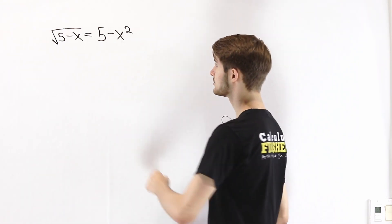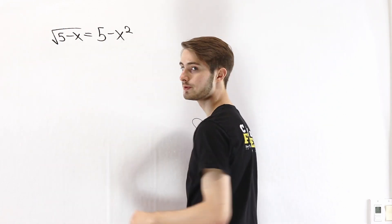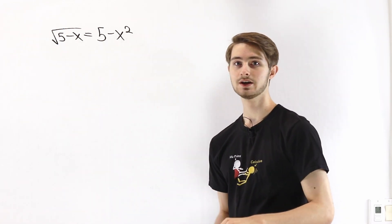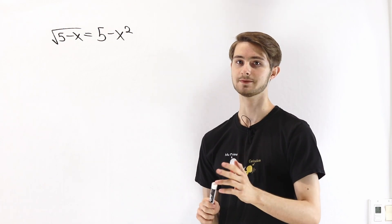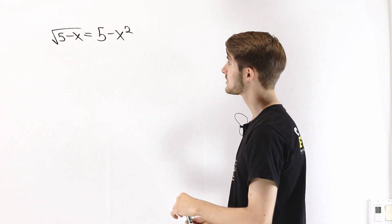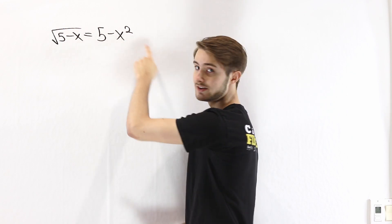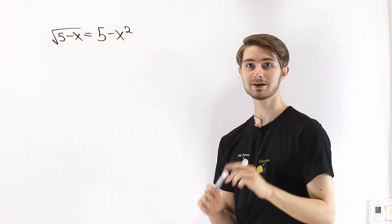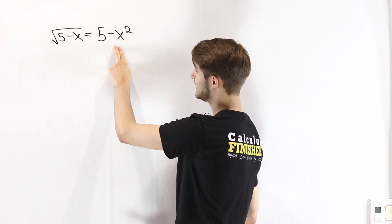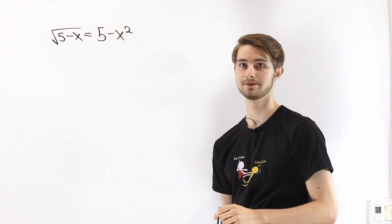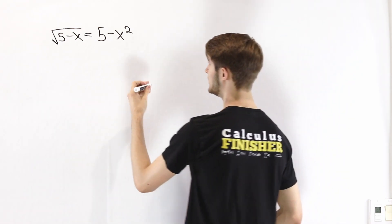The first thing I notice when I look at this equation is that the left and right side — the two functions we see — are very related. Because we see a square root on the left and x squared on the right, I'm going to guess that the right side is the inverse of the left side. Let's see if we can verify that.